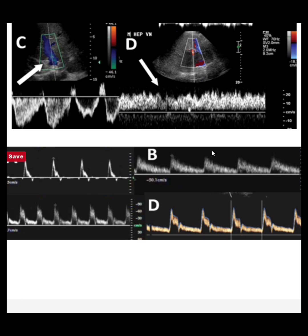This is an example of a renal artery waveform. If you ever see loss of diastolic flow in the renal artery, that's suggestive of something abnormal going on with the kidney. You should maintain low resistance flow during diastole. This can be characterized as a low velocity, low resistance flow.